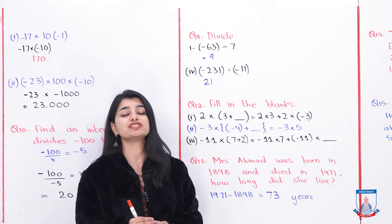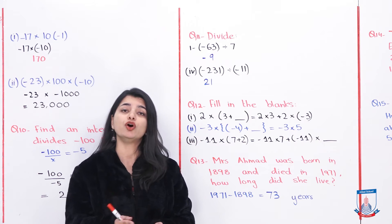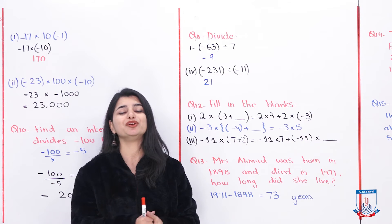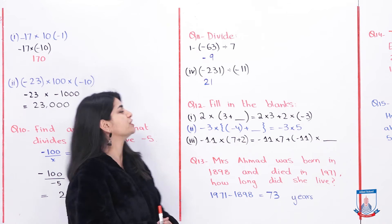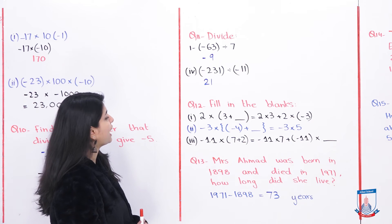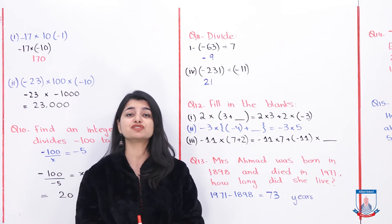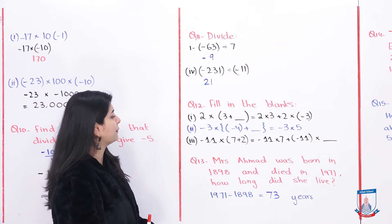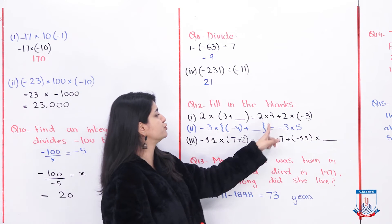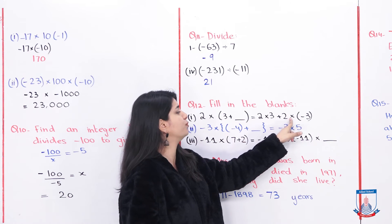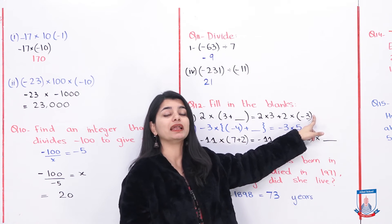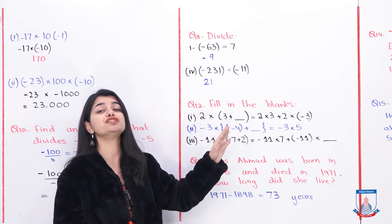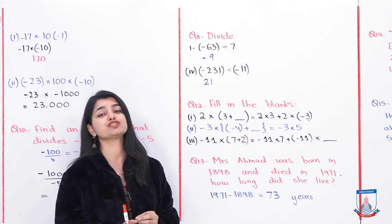That was the method for question number 11. The remaining two parts should be completed the same way using the same rules. Then we'll move on to question number 12: Fill in the blanks. You have to fill in the blanks using the right numbers.